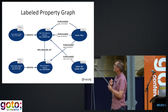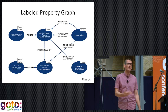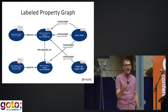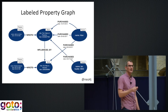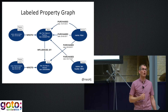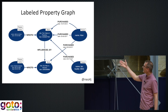We employ a very particular graph data model in Neo4j — a pragmatic approach to modeling graphs comprising four fundamental primitives: nodes, relationships, properties, and labels. This is what we call the labeled property graph. What we're showing here are a couple of authors, a couple of the books they've written, and a couple of people who've bought and likely read those books.